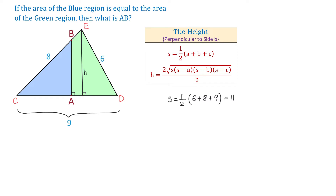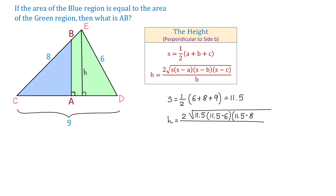S equals 11.5. Then H will be equal to 2 times the square root of 11.5 times (11.5 minus 6) times (11.5 minus 8) times (11.5 minus 9), all divided by 9. We are dividing by 9 because the height is perpendicular to the side that has 9 units.